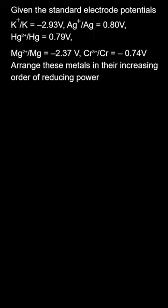Given the standard electrode potentials: K⁺/K = -2.93V, Ag⁺/Ag = 0.80V, Hg²⁺/Hg = 0.79V, Mg²⁺/Mg = -2.37V, Cr³⁺/Cr = -0.74V. Arrange these metals in their increasing order of reducing power.